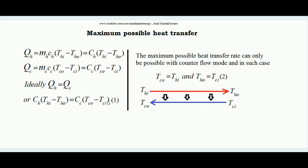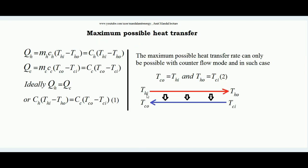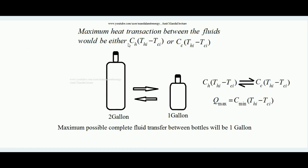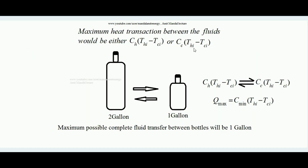So we can write C_H·(T_HI − T_HO) = C_C·(T_CO − T_CI). Now, assuming the maximum heat transfer condition — where the hot fluid exits at the inlet temperature of the cold fluid and the cold fluid exits at the inlet temperature of the hot fluid — the heat supplied by the hot fluid equals C_H·(T_HI − T_CI), and the heat absorbed by the cold fluid equals C_C·(T_HI − T_CI).